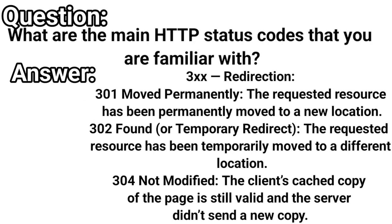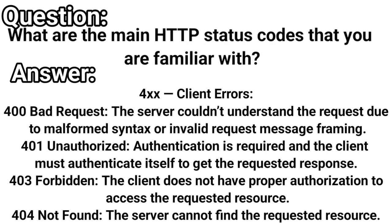The 300 series is for redirection. 301 Moved Permanently means the requested resource has been permanently moved to a new location. 302 Found, or temporarily redirected, means the resource has been temporarily moved to a different location. 304 Not Modified means the client's cached copy of the page is still valid and the server didn't send a new copy.